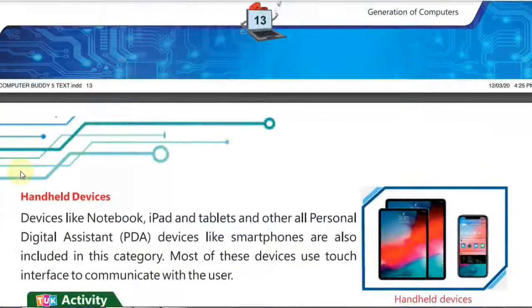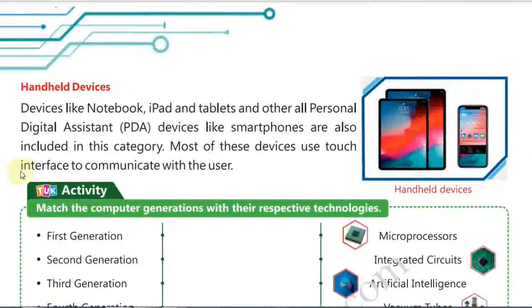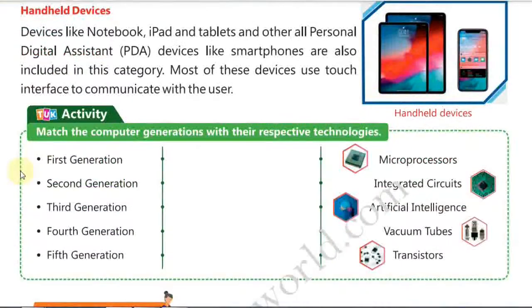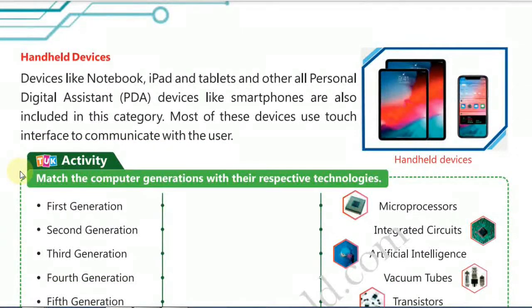The next type is handheld devices. These devices are called handheld computers because they are generally carried in the hand or can be kept in pockets. Some examples are the tablet and the PDA — Personal Digital Assistant. You can carry them anywhere. They have built-in output and input devices which cannot be easily separated, and they come in a rectangular or square form.